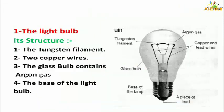We have two types of lamp. Number one: the light bulb. Its structure consists of four parts, as we see in this image. Number one: the tungsten filament. Number two: two cover wires. Number three: the glass bulb containing argon gas. Number four: the base of the light bulb.